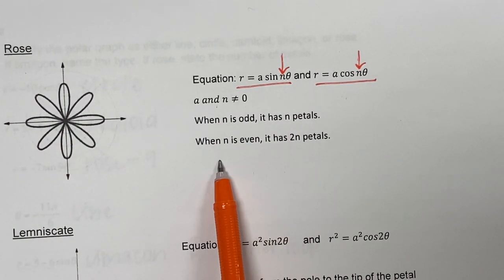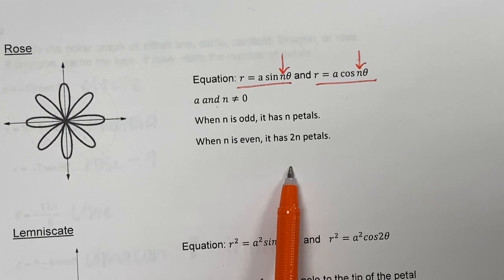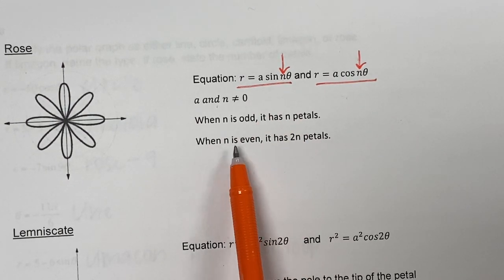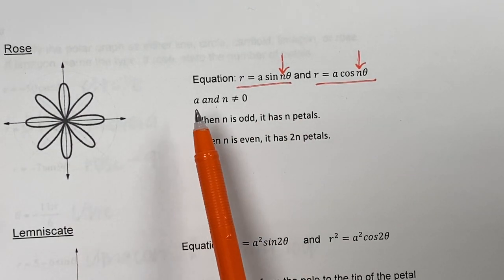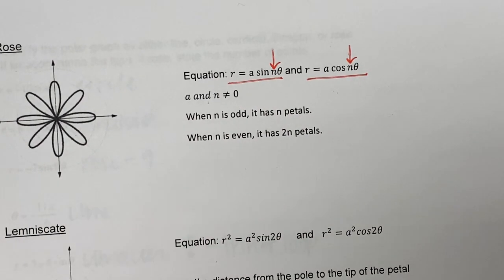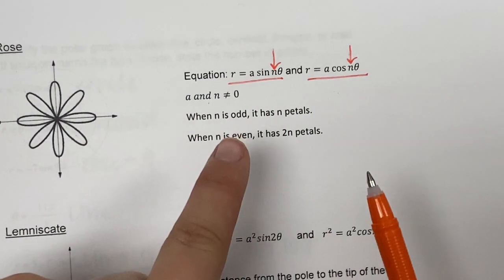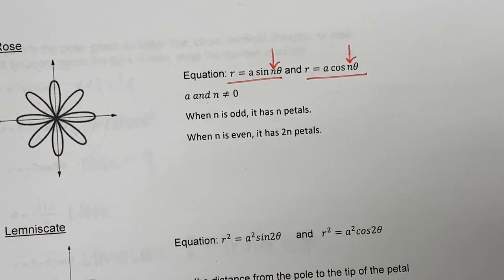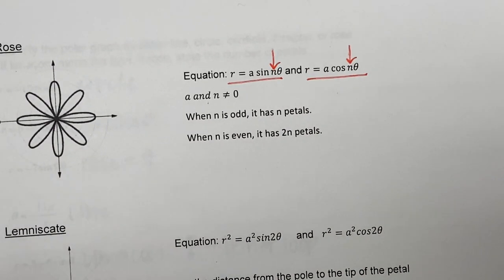But if n is even like four, you double that. So if the number was four, you would actually have eight petals. I'll let you use your project to look at the difference between when it's sine versus cosine.